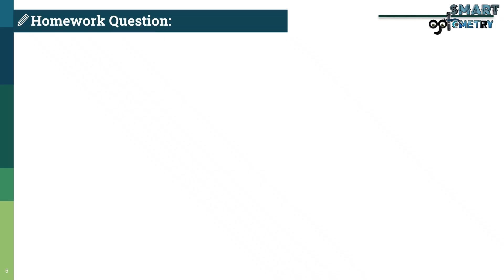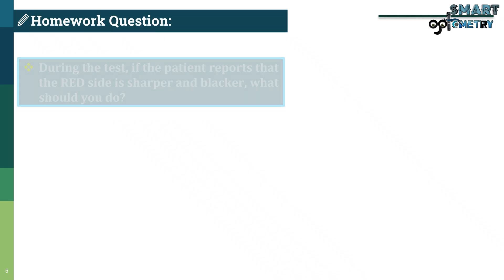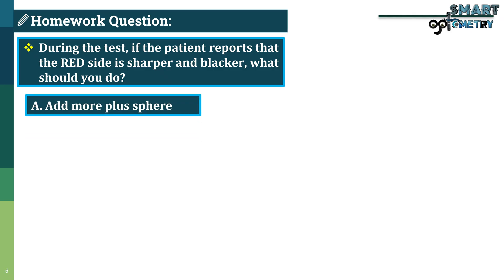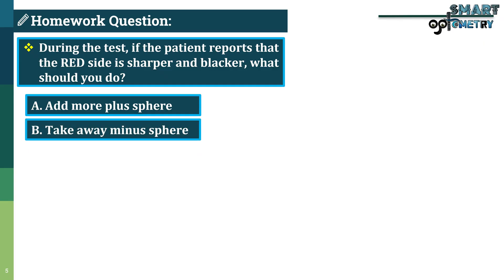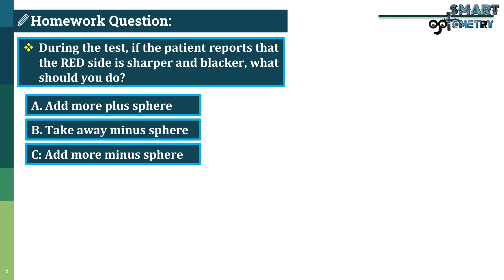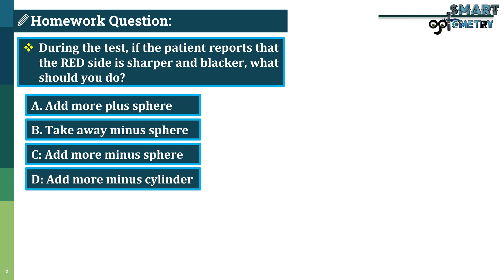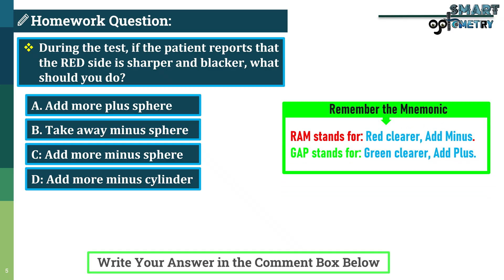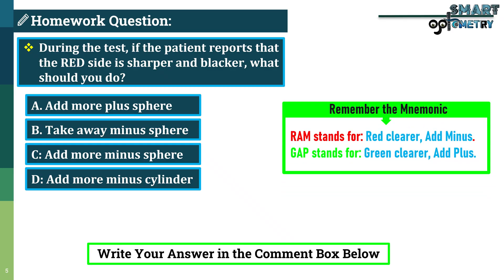Now, here is a quick homework question. During the test, if the patient reports that the red side is sharper and blacker, what should you do? Option A: add more plus sphere. Option B: take away minus sphere. Option C: add more minus sphere. Option D: add more minus cylinder. Apply the GAP and RAM rule and write your answer in the comment box below.